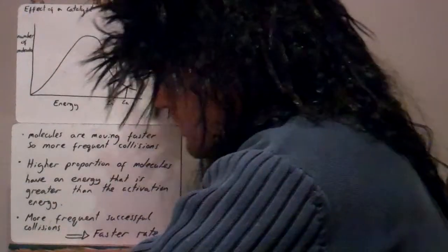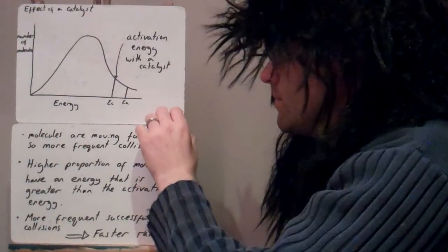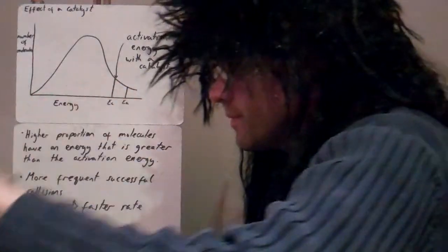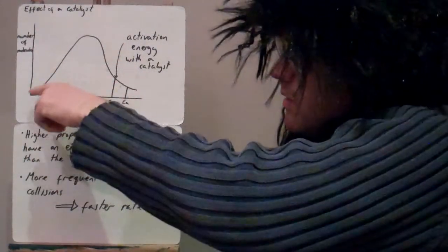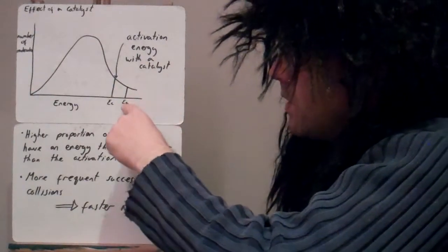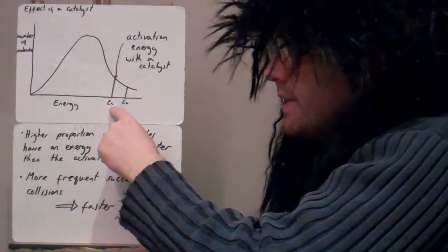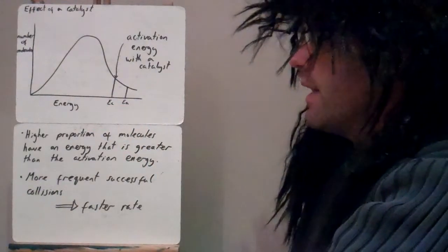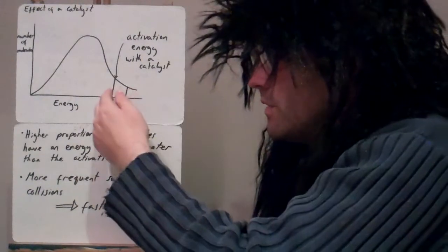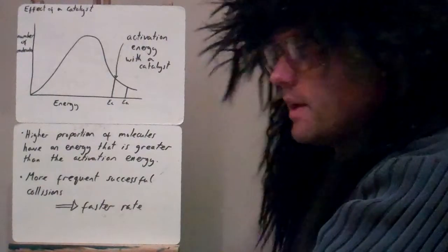If we have a look at the effect of a catalyst. So, the same graph, but we've just got a new line now, EC, which is the activation energy when we have a catalyst. As you can see, that's further to the left on the x-axis.